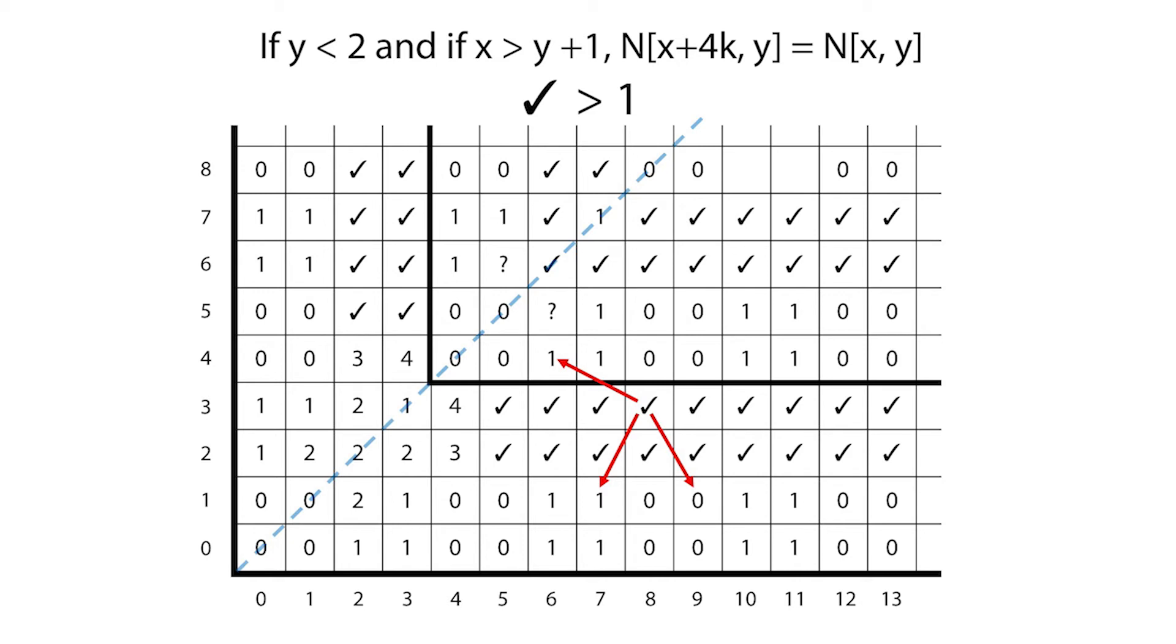Similarly, there can be no fours in row two. So, in rows two and three, the values of the checkmarks must alternate between two and three, with each reverse knight's move going either east-northeast or east-southeast.